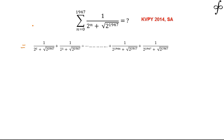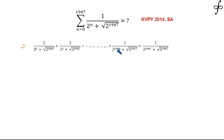This interesting summation problem appeared in the KVPY 2014 paper under Stream SA. To find this particular sum, I have written down the first few and the last few terms. Putting n equal to 0 gives the first term, n equal to 1 gives the second term, n equal to 1946 gives the penultimate term, and n equal to 1947 gives the ultimate term.